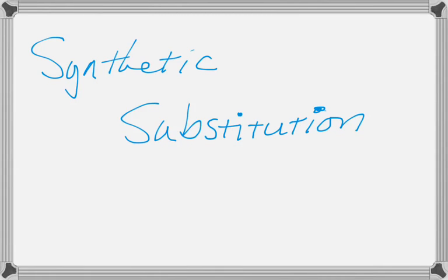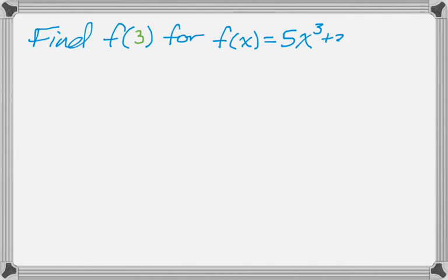Alright, this video is going to show you how to do synthetic substitution, which you maybe already know. And what we want to do is something like this: find f(3) for f(x) equals 5x³ + 3x² - 2x + 4. So what's important is that every power of x is accounted for right now. We have cubed, squared, first, and to the 0, because we're going to need that when we set it up.